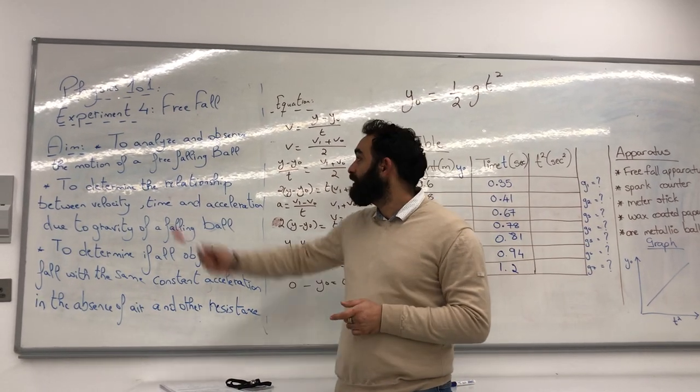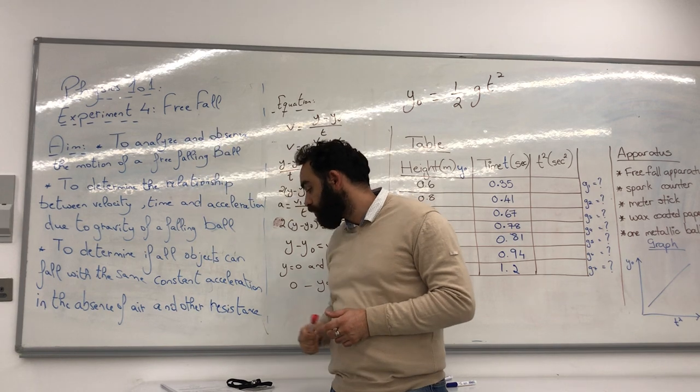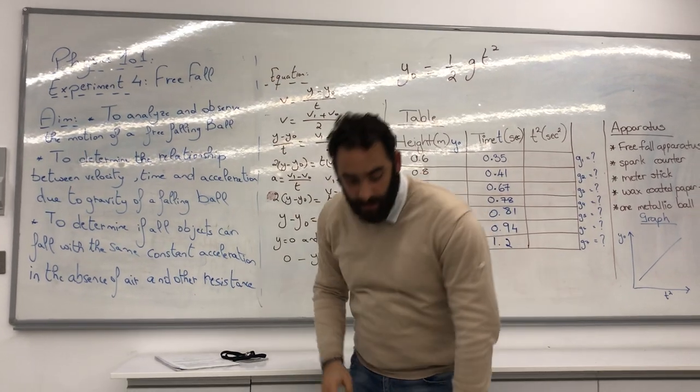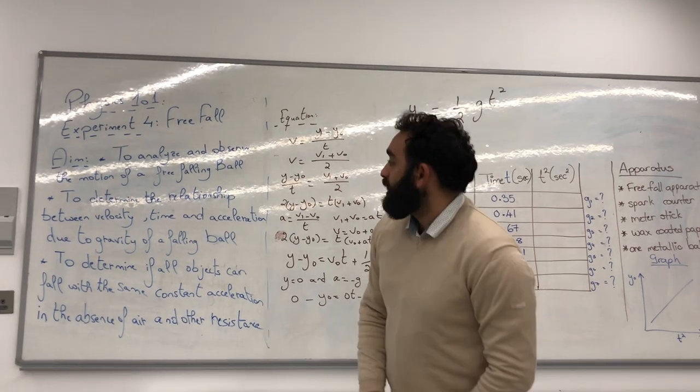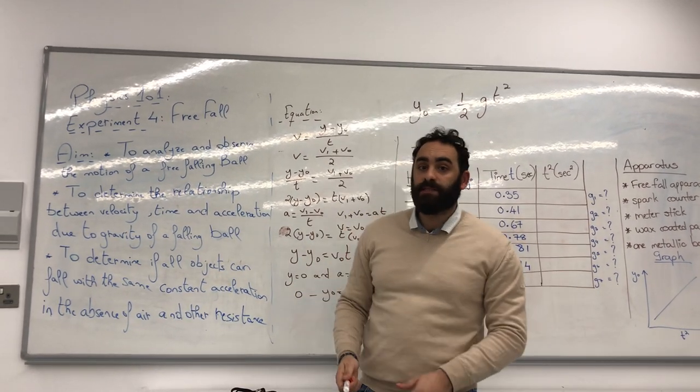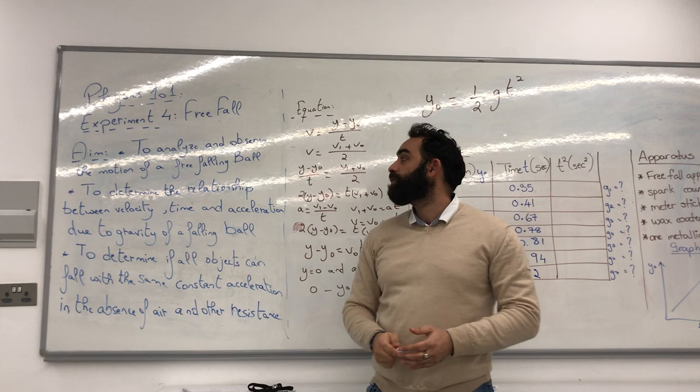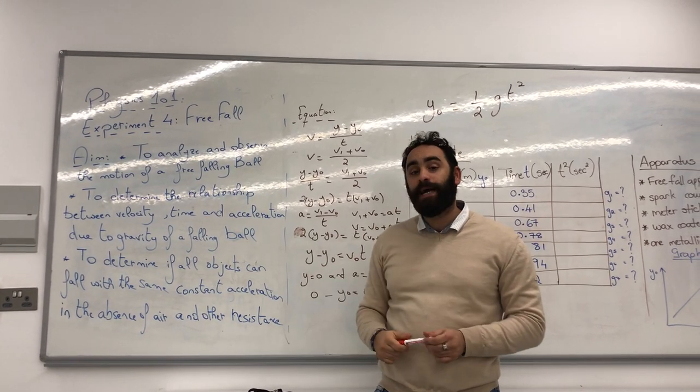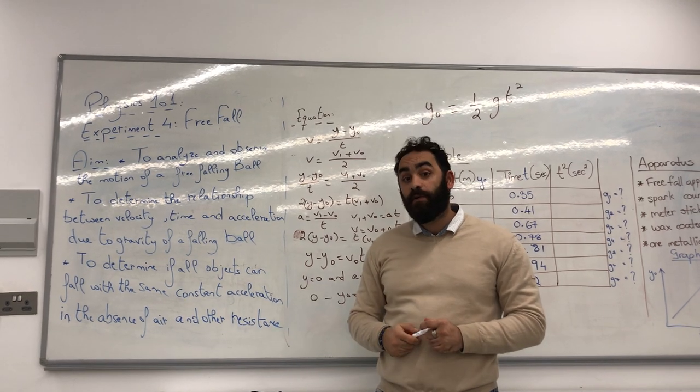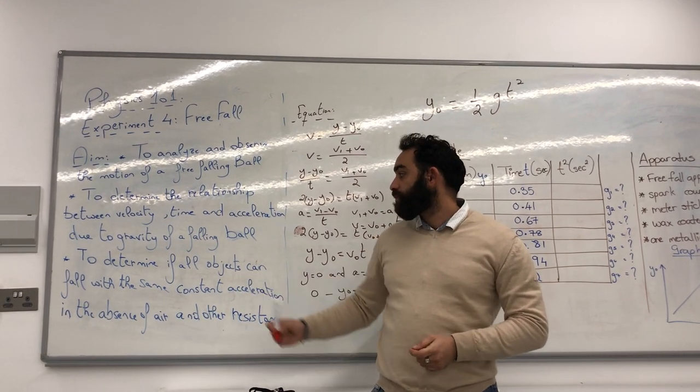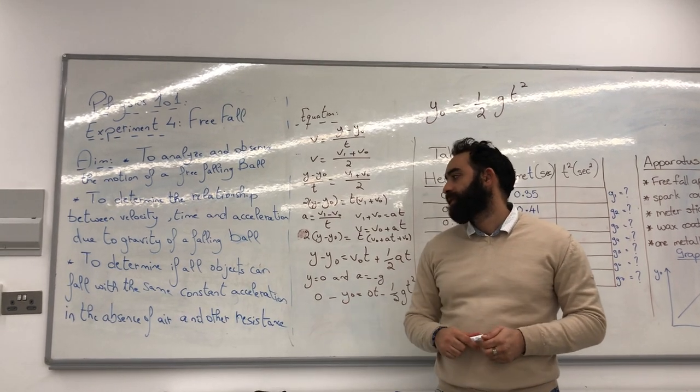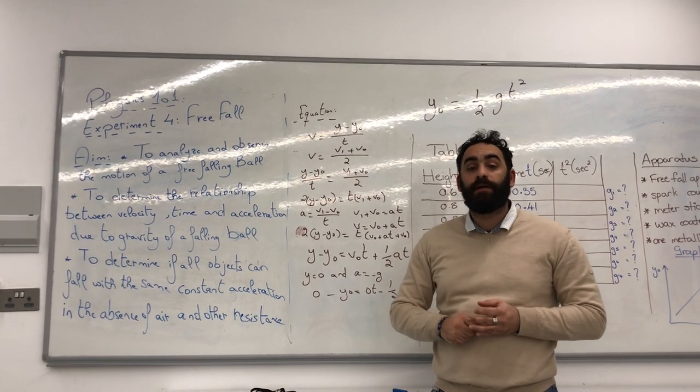As the name states, it's a free fall, so the object will be just falling, like this, freely. The aim of today's experiment is firstly to analyze and observe the motion of a free falling ball, to determine the relationship between velocity, time and acceleration due to gravity of a falling ball, and finally to determine if all objects can fall with the same constant acceleration in the absence of air or other resistances.